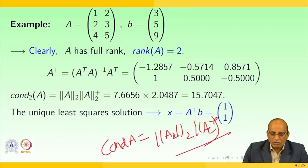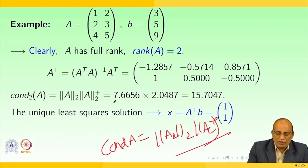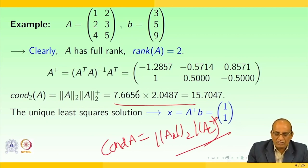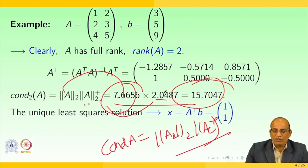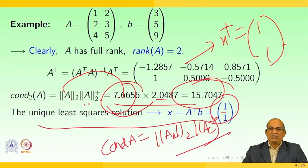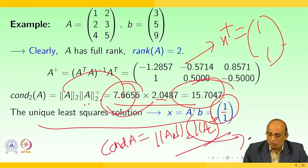After calculation, the norm of A plus turns out to be 7.6656, and the norm of A is 2.4, giving a condition number of approximately 15.7047. The least square solution is x equals A plus times B. This is what is called the pseudo inverse solution.